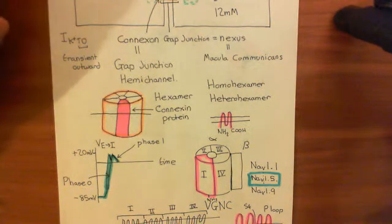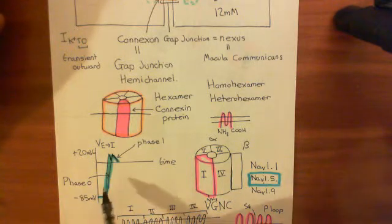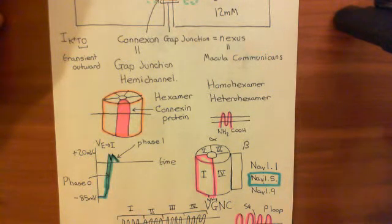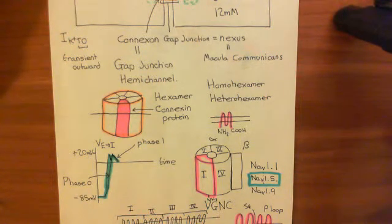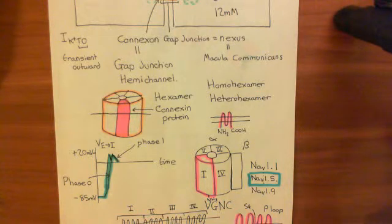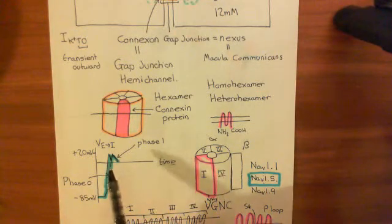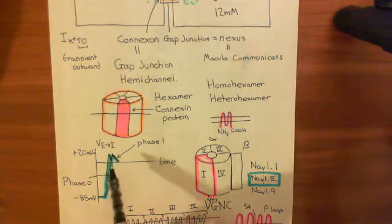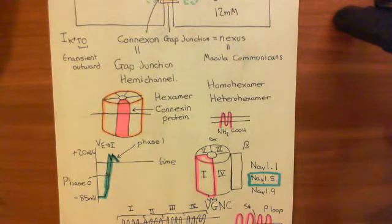Then the voltage-gated sodium channels close. At some point in phase 0, when we were rapidly depolarizing the cell, certain potassium channels became activated — the KV1.4 homotetramers and KV4.2/4.3 heterotetramers — and they open to allow the movement of potassium out of the cell. That moves positive charge out, repolarizing the membrane a little to around 0 millivolts. However, these channels are open for a very short period of time, so they don't do that much, and then they close.